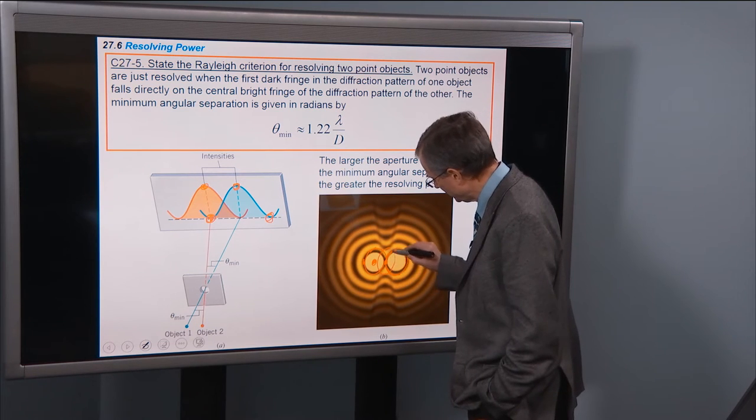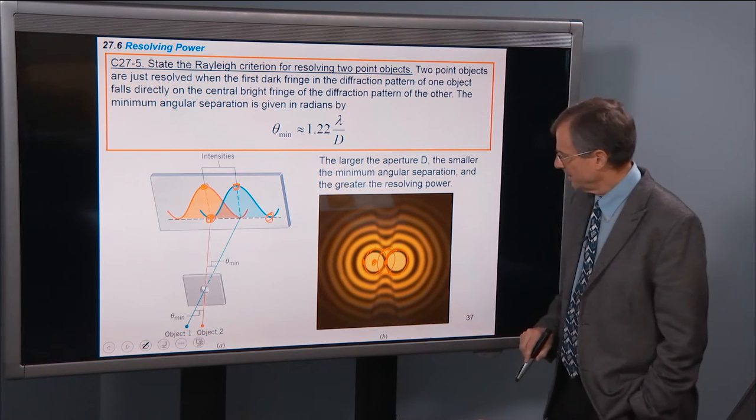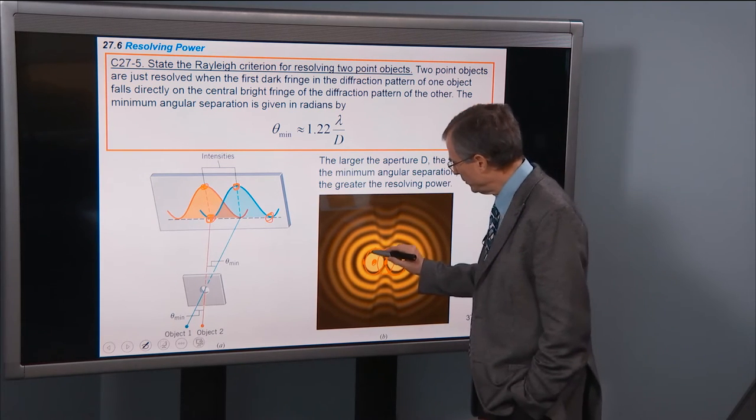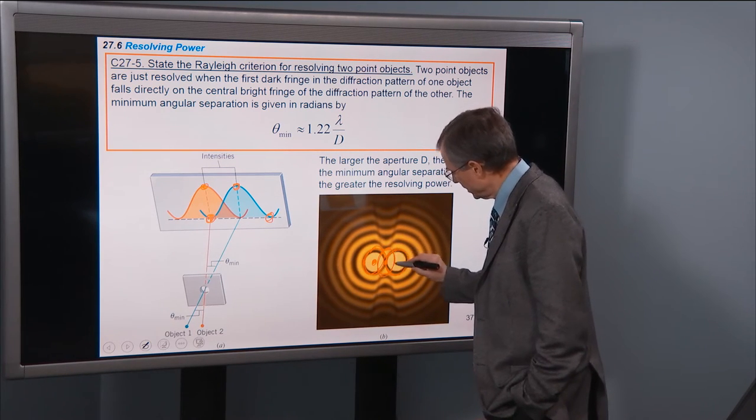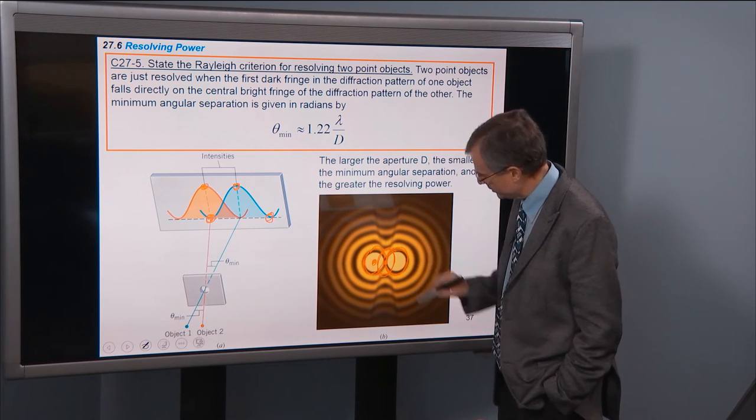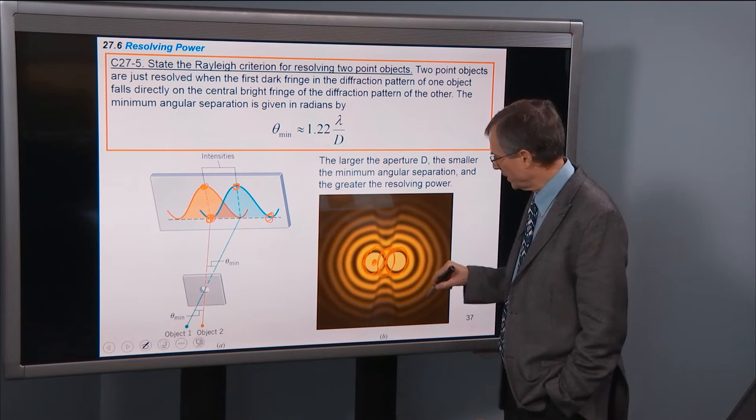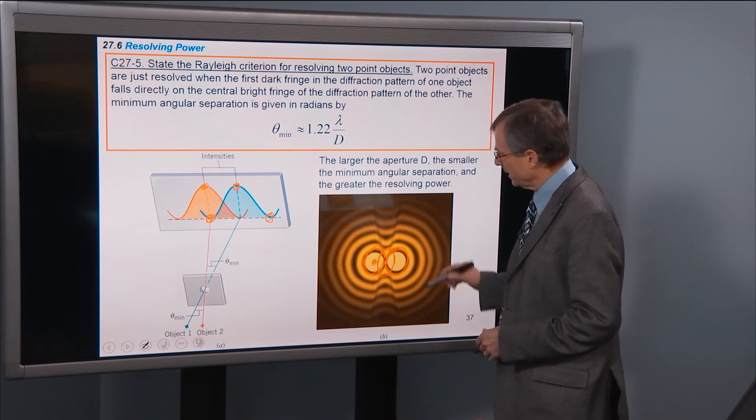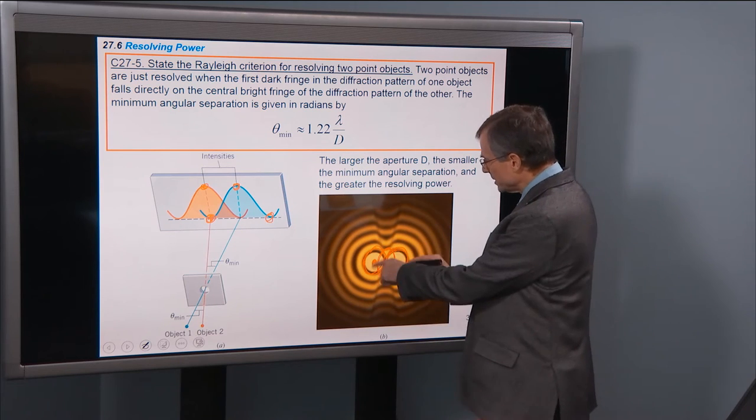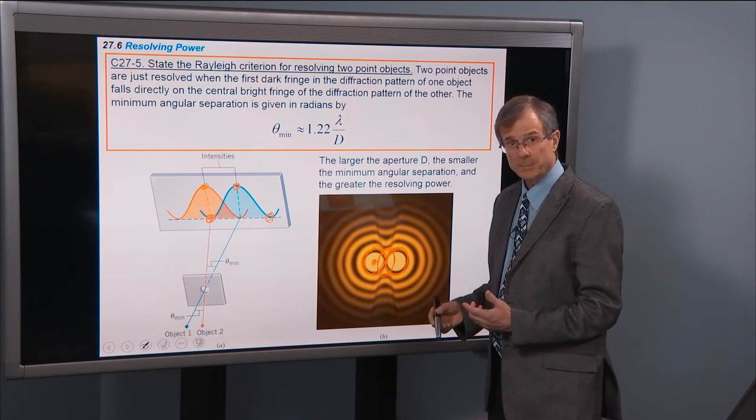So we actually need to move this circle in order for it to look like this Rayleigh criterion, we need to move this circle over to here. So its central bright fringe corresponds with the dark fringe from the other one. Then is the point you can't tell them apart. If you're further apart than that, as shown in the image before I started drawing on it, then you can tell that they're two separate spots.